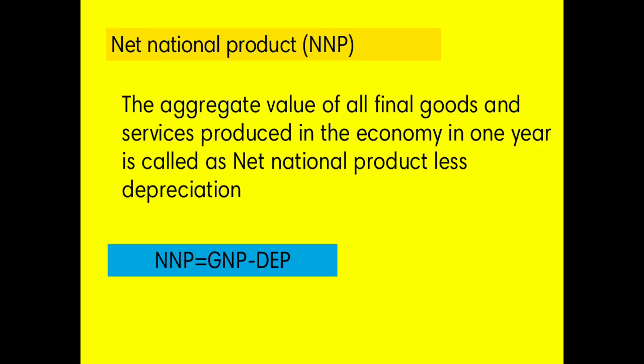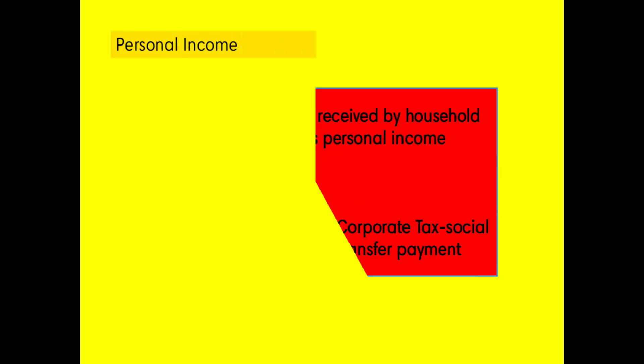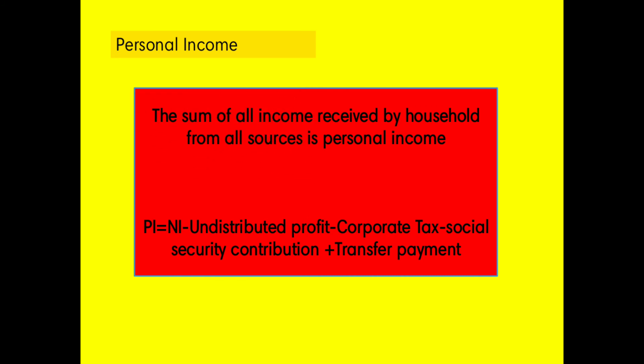The next identity is Personal Income. The sum of all income received by a household from all sources is known as personal income. All sources means the different sources from which you receive money — that total sum is personal income.